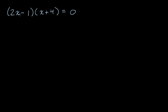At first, you might be tempted to multiply these things out, or there are multiple ways you might have tried to approach it. But the key realization here is that you have two things being multiplied — the first thing is two x minus one, and that expression is being multiplied by x plus four — and it's being equal to zero. So one or both of these expressions needs to be equal to zero.